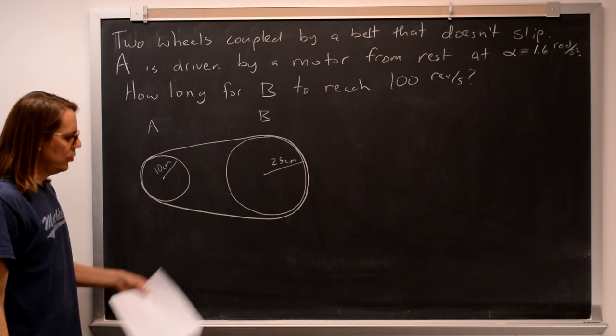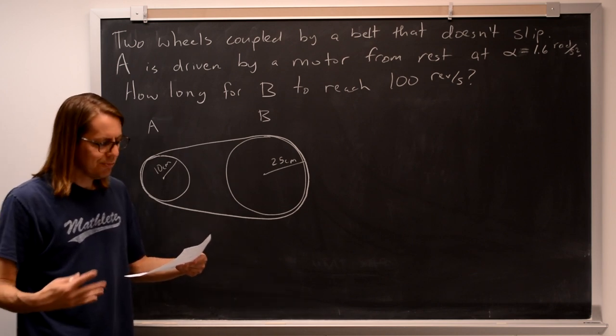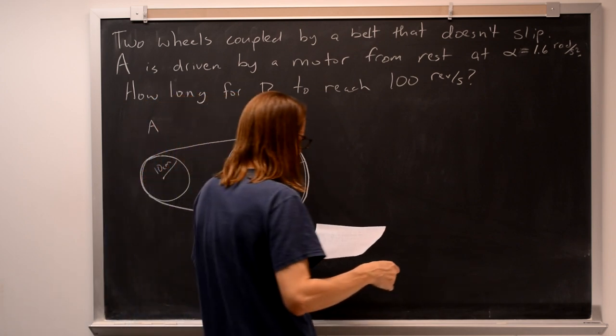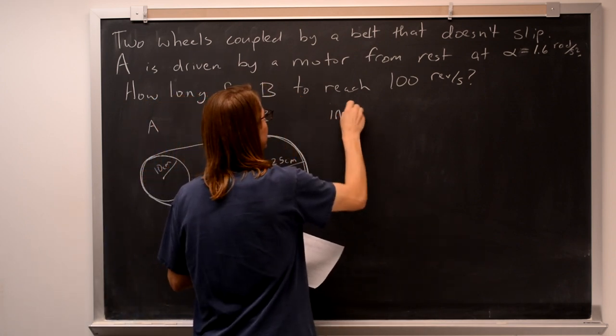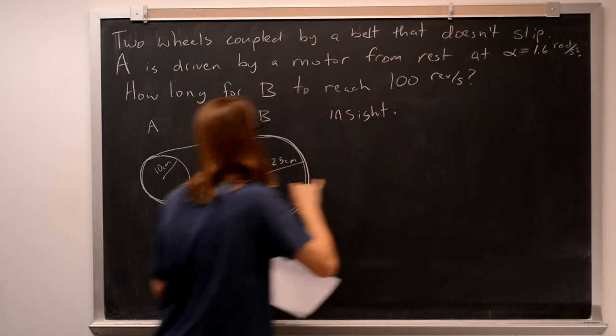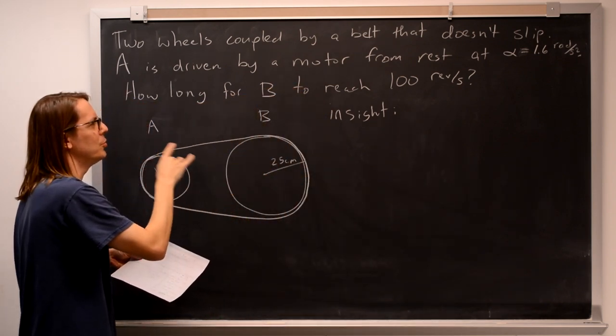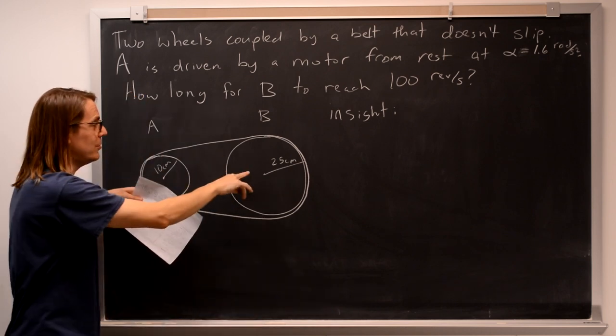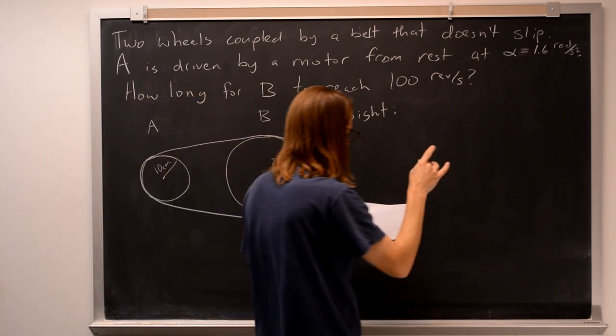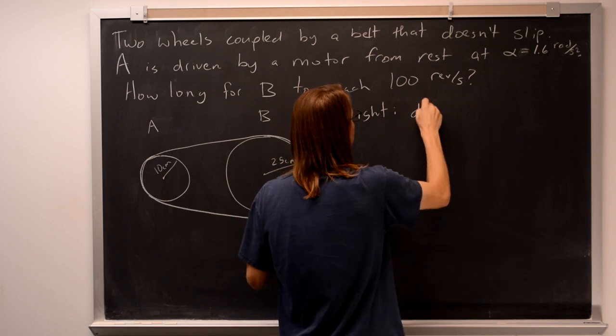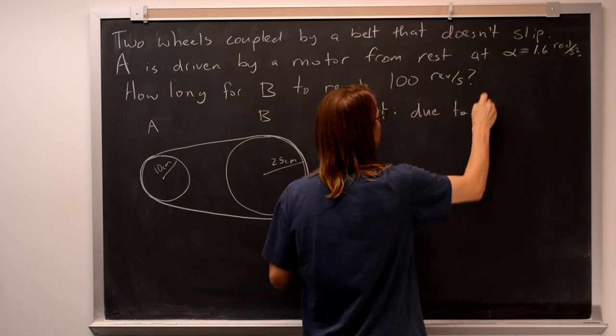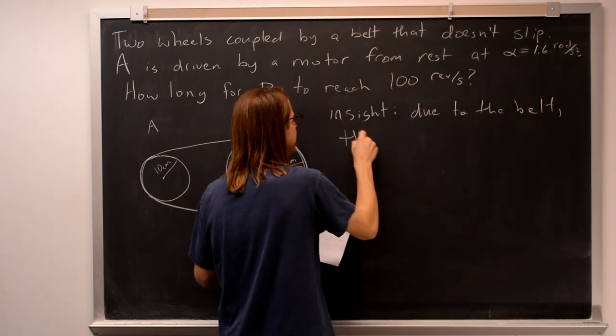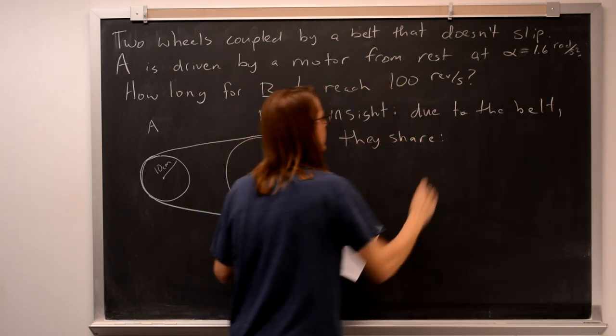So really this is mostly a kinematics problem. Let's look at our insight about this problem that we're going to have. And that is whenever you have a belt between these, when I say something like it doesn't slip, that means the motions of these two things are connected. So due to the belt, they share, let's think about what they share.